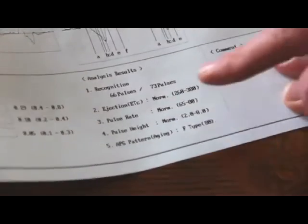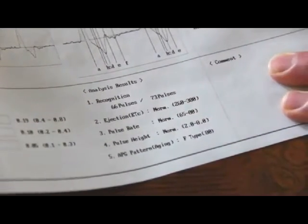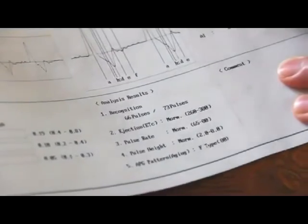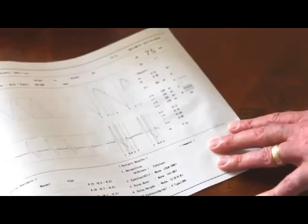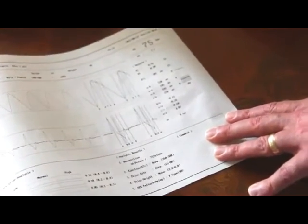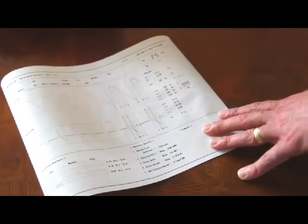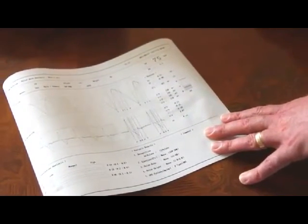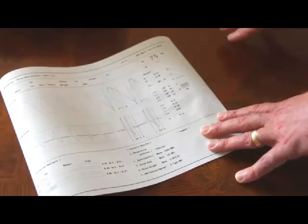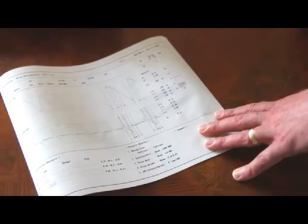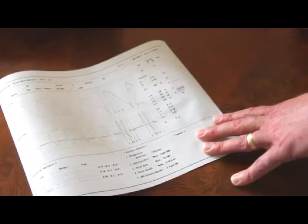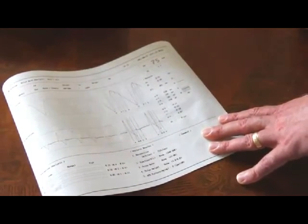The next thing that we look at is the ejection time. The normal is between 260 to 380 milliseconds. And we see with hers, the ejection time was 301. Those are in milliseconds, that's how long it took the aortic valve to open and close. Indications, if it's too fast, could be anxiety or even possible thyroid issues. And if it's too high, then that can be an indication the heart's not outputting like it should and possibly also stenosis within the aortic artery.